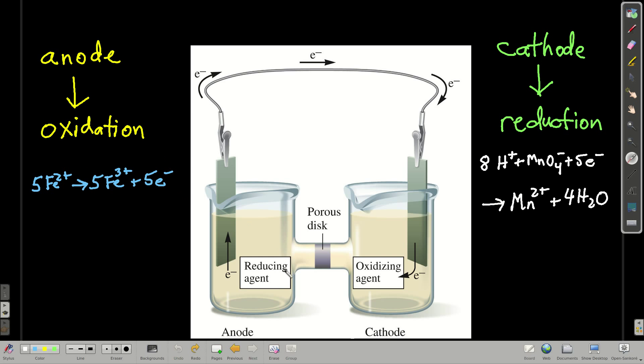So, remember that the anode is where oxidation happens, or another way of saying that, it's where the reducing agent is. Remember, whatever's oxidized is the reducing agent. Whatever's reduced is the oxidizing agent. So in the anode, there's oxidation, which is where the reducing agent is. In the cathode, there's reduction, which is where the oxidizing agent is.